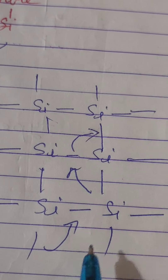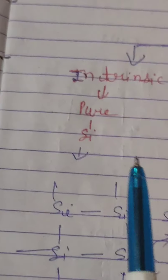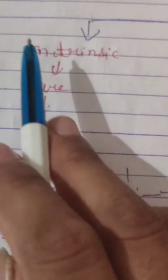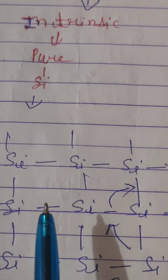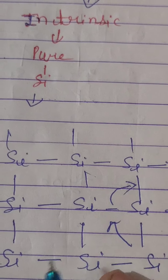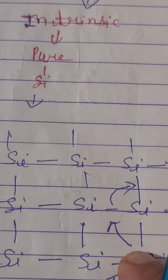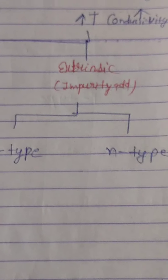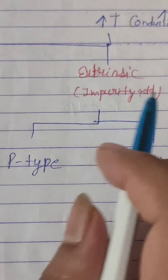An intrinsic semiconductor is a pure semiconductor in which no impurity is added. When temperature increases, the conductivity of the intrinsic semiconductor is increased. The second type is extrinsic semiconductor, in which impurity is added.